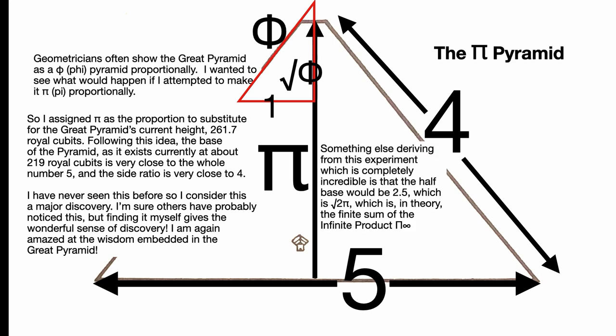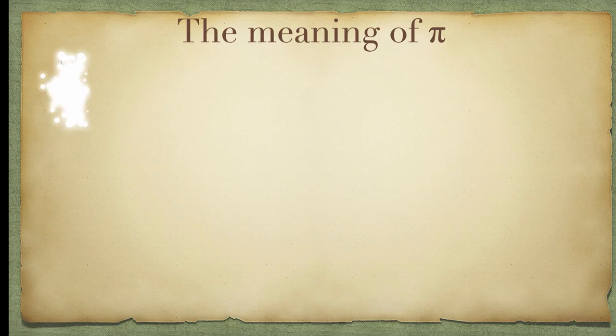Something else really amazing from this, I think, is that the half base would be 2.5, which is the square root of 2 times Pi, which is in theory the finite sum of the infinite product. Now that seems impossible, but the infinite product could have a finite sum. But that's what some mathematicians say. Unbelievable.